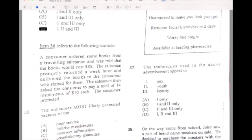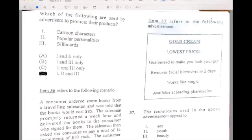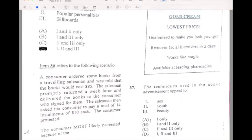This one was a question that we had before, too. A consumer bought a book from a traveling salesman that was sold for $85. The salesman promptly returned in the week after and the consumer was signed for them. The salesman then asked the consumer to pay $14 installment for $10 each. The consumer most likely protested because of the incorrect information. So, thirty-six is C. Thirty-seven, we had this question, too. I'm not sure if we can see the label, but the technique used will be youth and beauty. That will be B.